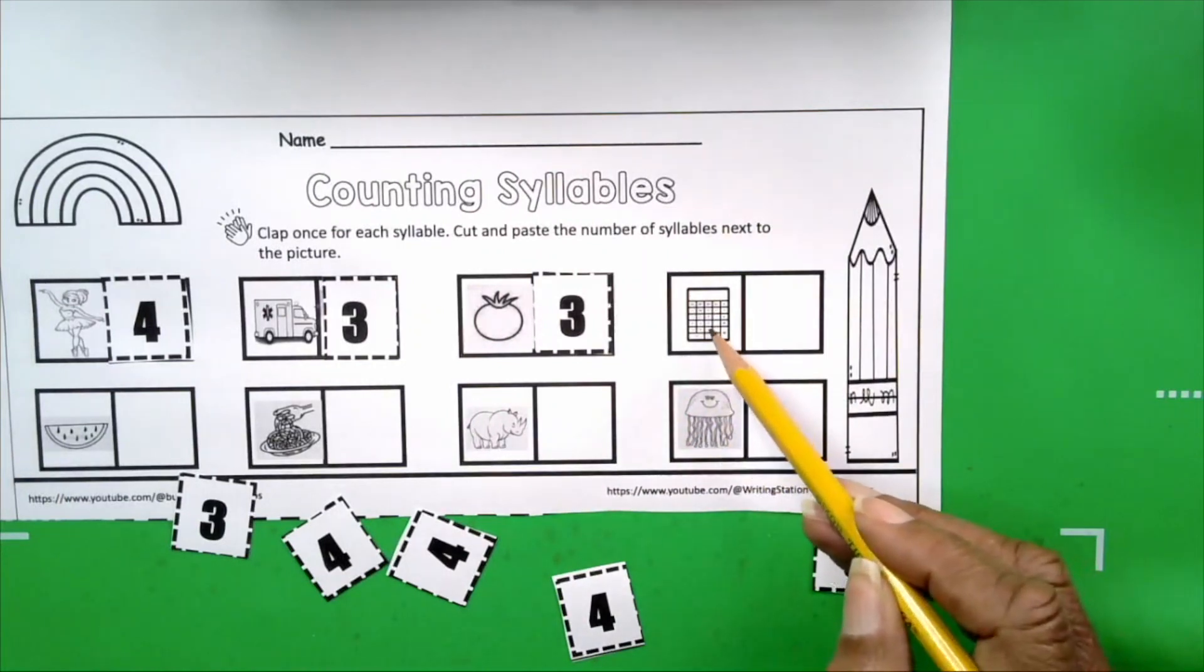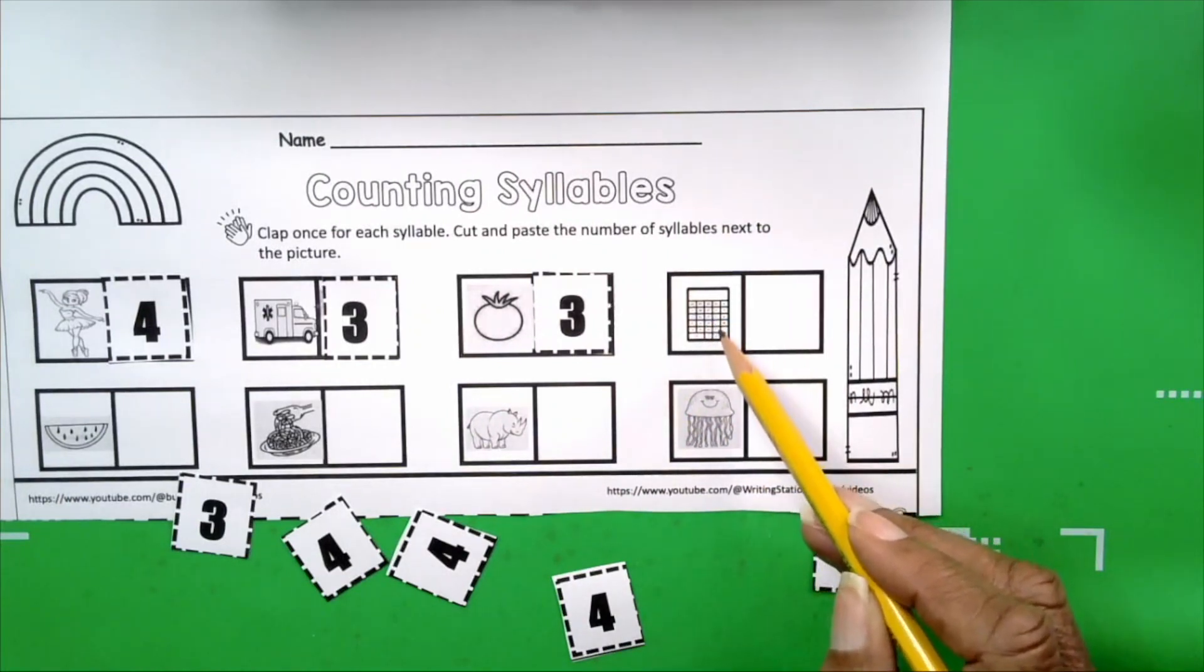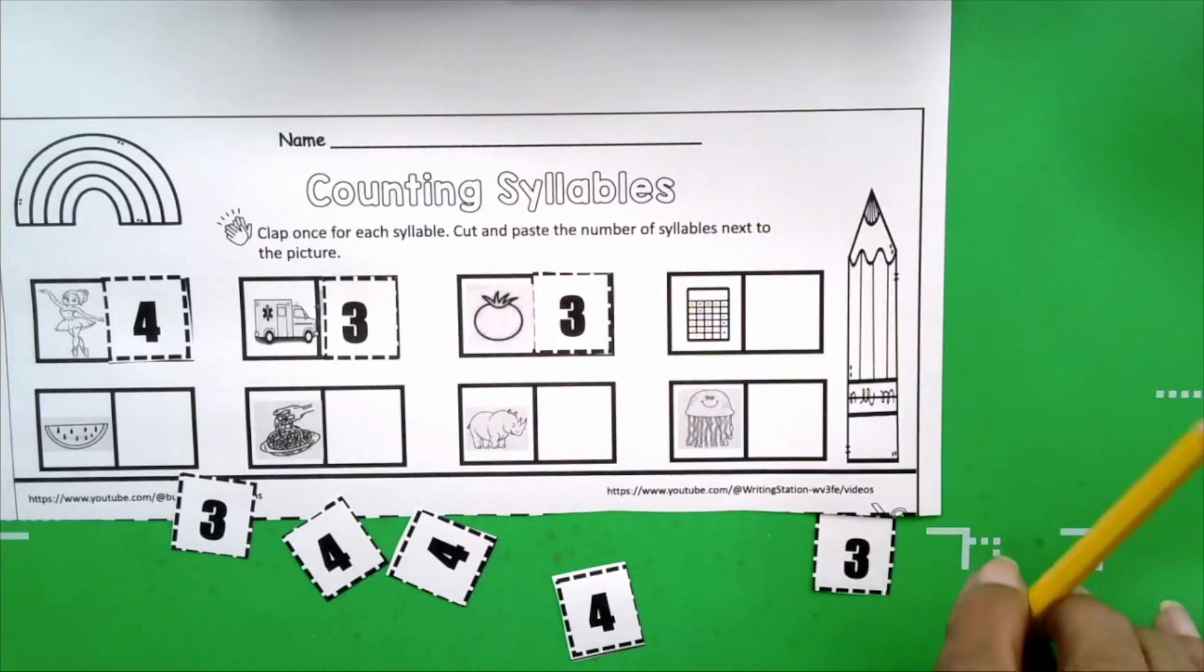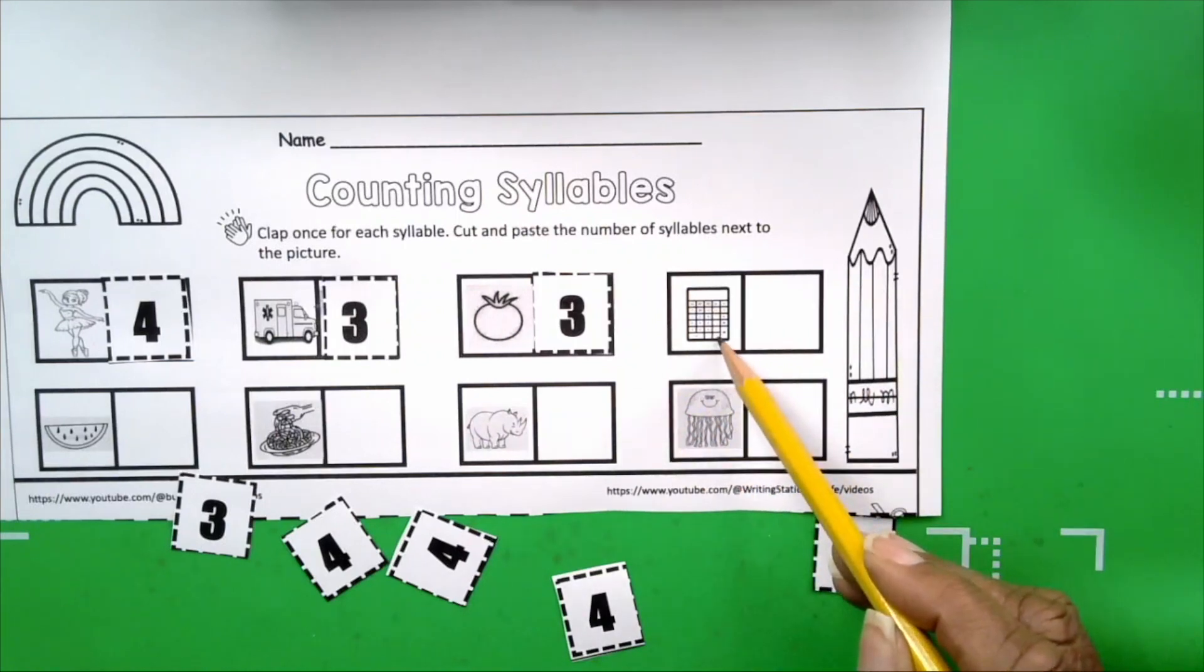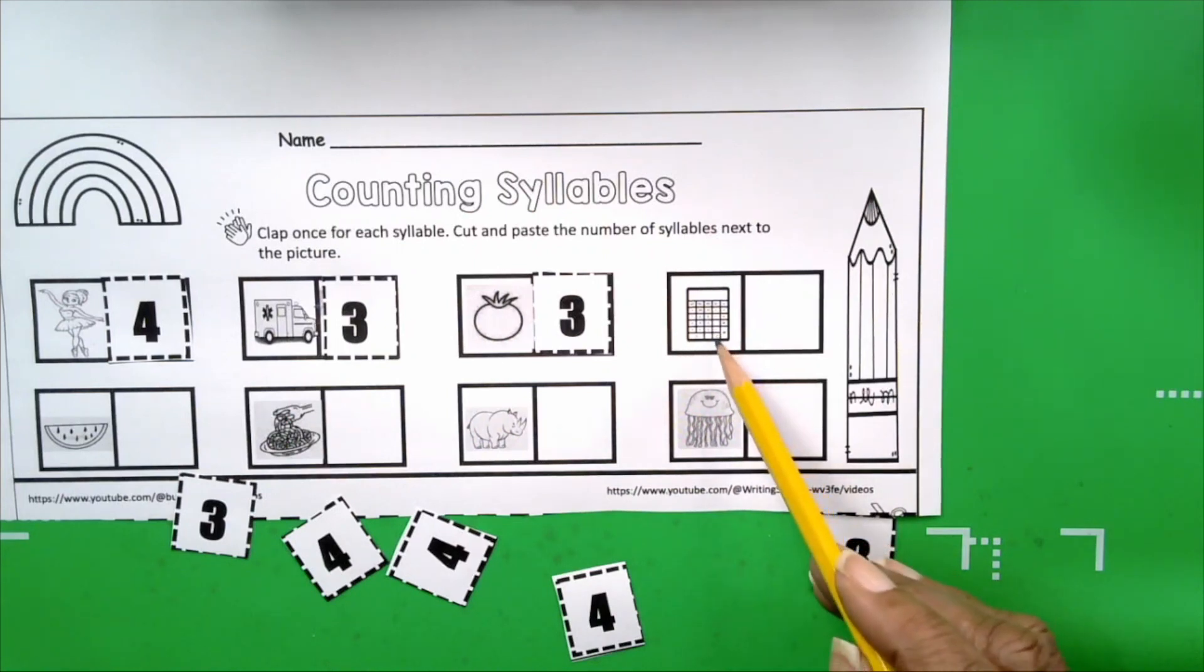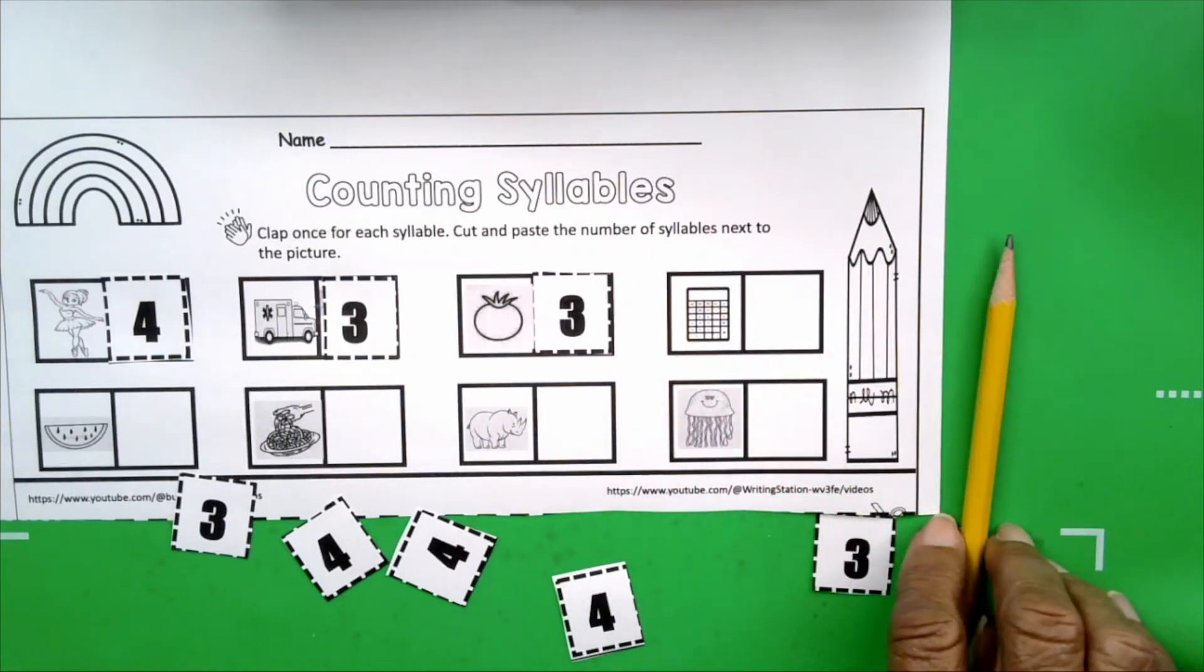As you see the picture with all those little numbers on it, this is a calculator. Did you know that? Could you tell? Yes. I know you could because you're a smart bunch.